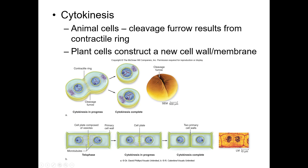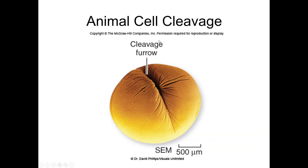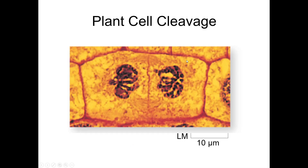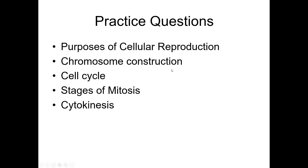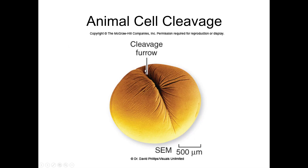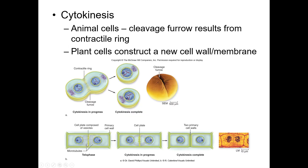You will have one question on the difference between animal and plant cytokinesis. Plant cytokinesis occurs via the Golgi apparatus, which essentially creates a new plate to divide the two cells. In animal cells, it's the cytoskeleton that forms a ring to pull in the two membranes and separate the two halves. They're both cytokinesis, but they happen in different ways because animal cells are more pliable than plant cells in terms of how they divide.